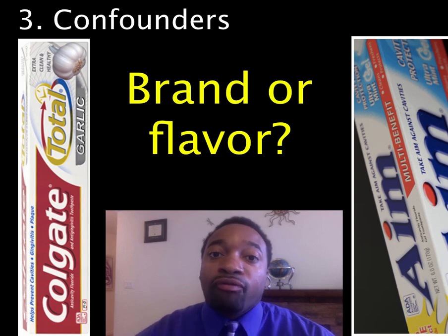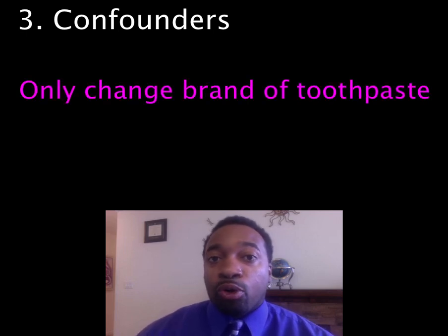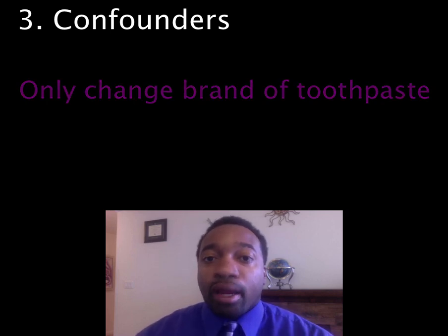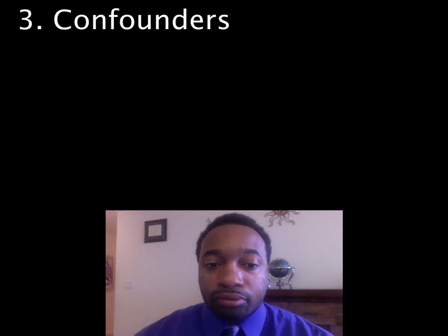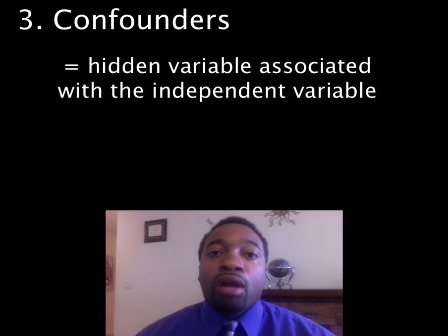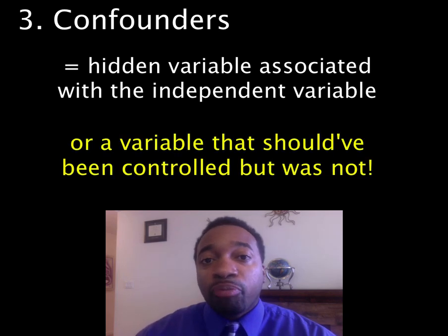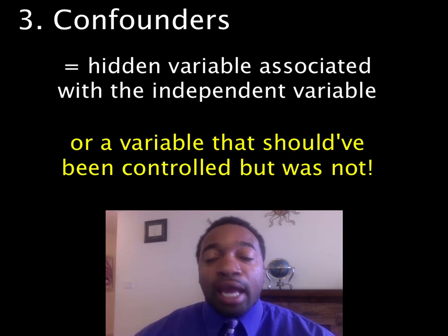This is why we can only change one variable in an experiment. We need to make sure that dentists are getting the same flavor of toothpaste when we're only changing the brand. This brings us to our third error: a confounder error. A confounding variable or confounder is a hidden variable that might explain our results. I tend to think of a confounder as a variable that should have been constant — a controlled variable — but was not. In those cases, we can't be sure that our manipulated variable or this uncontrolled variable is the explanation for our results.